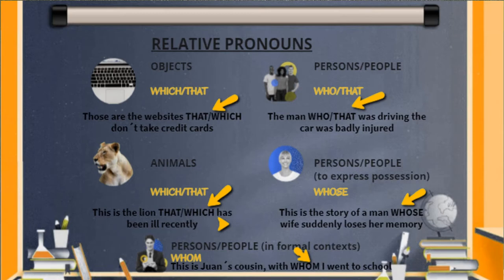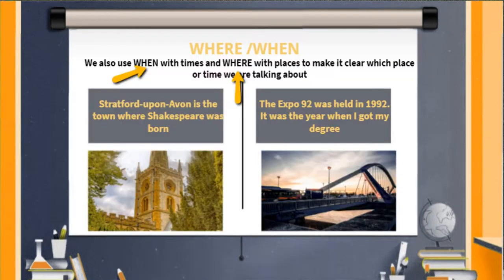Whom is also used in very formal contexts and refers to people. We will deal with it in another video, but here's an example: this is Juan's cousin with whom I went to school. We can also use when with times and where with places to make it clear which time or place we are talking about. For place: Stratford-upon-Avon is the town where Shakespeare was born. For time: the Expo 92 was held in 1992 — it was the year when I got my degree.